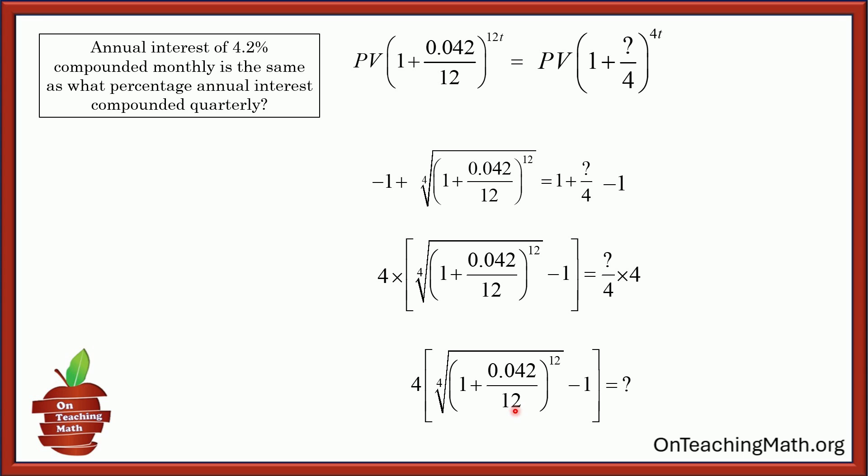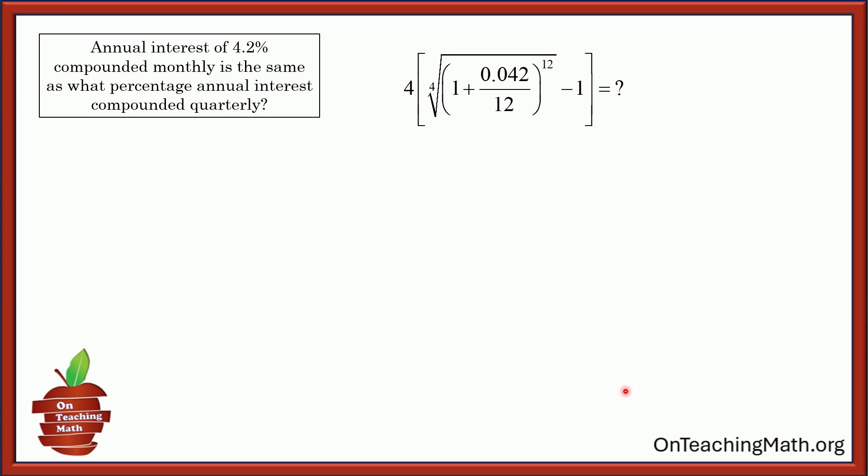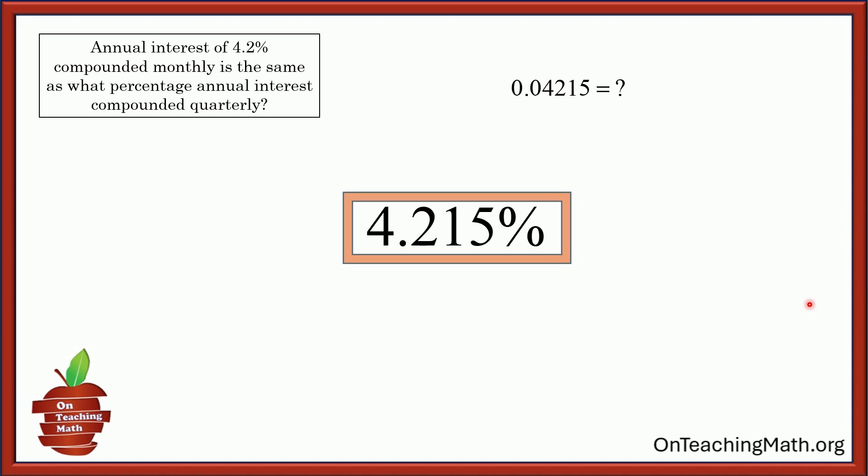So whatever that turns out to be is our answer. Now that's going to be a decimal. We're going to have to change it into a percentage. But you get the general idea. So now when you do this, all you got to do is be very careful that you're doing your order of operations right in your calculator. It's not entirely obvious. Not as easy to do as you might believe. So just be very careful when you plug everything in. Just go very methodically. Be very careful the actual operations are being done in the correct order. PEMDAS. And we get 0.04215, which is 4.215%. That's our answer.